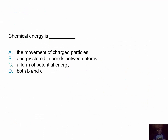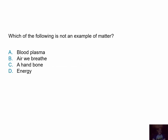Sample questions: Chemical energy is — A, the movement of charged particles; B, energy stored in the bonds between atoms; C, a form of potential energy; or D, both B and C? And: which of the following is not an example of matter — A, blood plasma; B, the air we breathe; C, a bone from the hand; or D, energy?